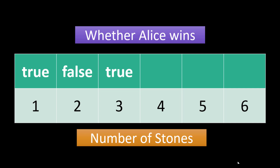For 4 stones — since the number of stones is a perfect square, Alice will surely win the game as she can take out all the stones at once. So when the number of stones is 4, Alice wins the game.